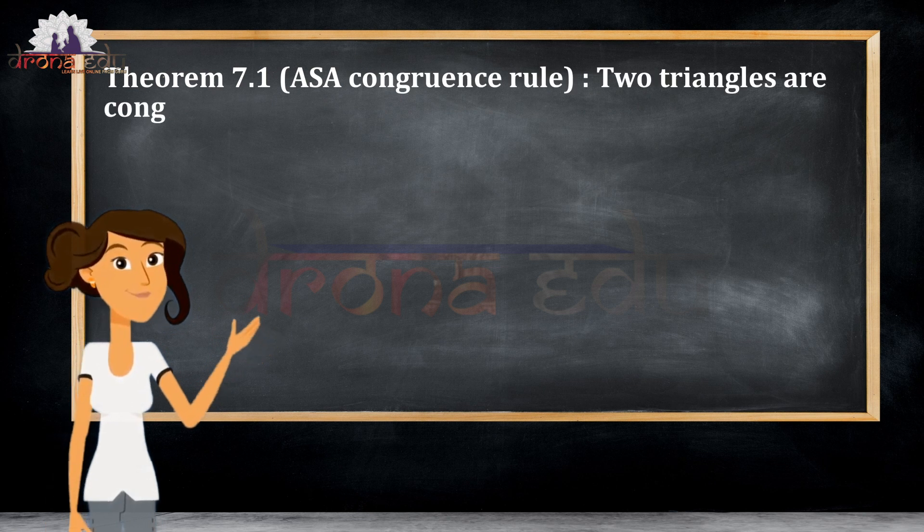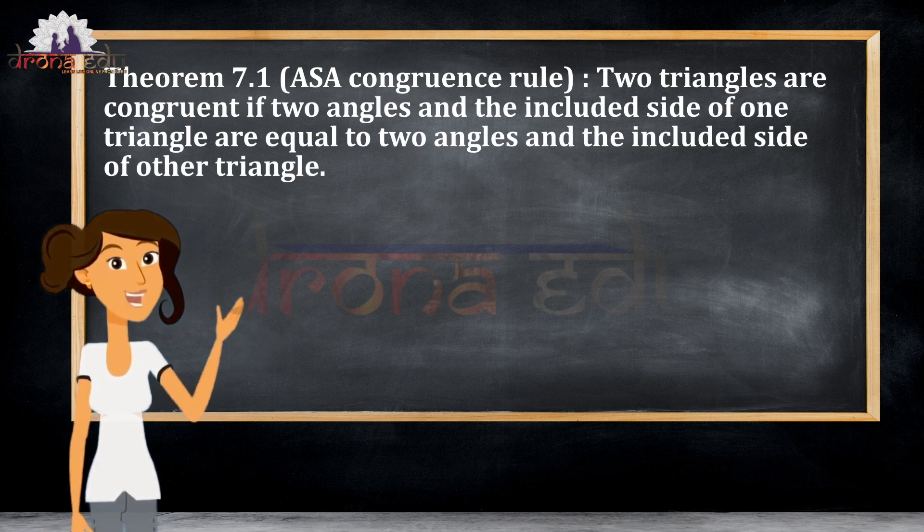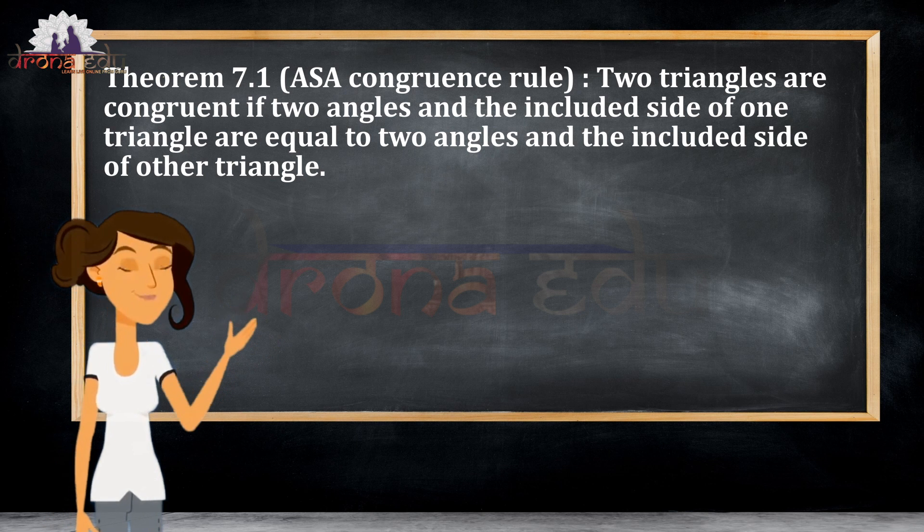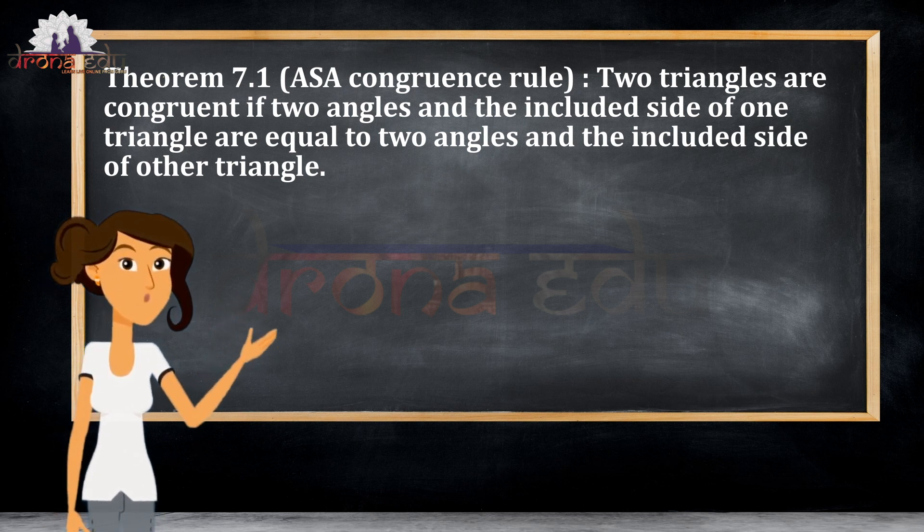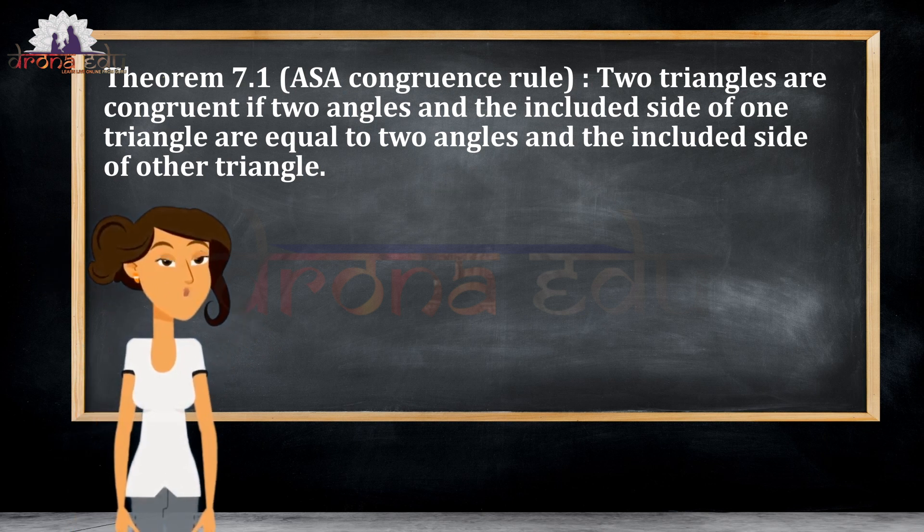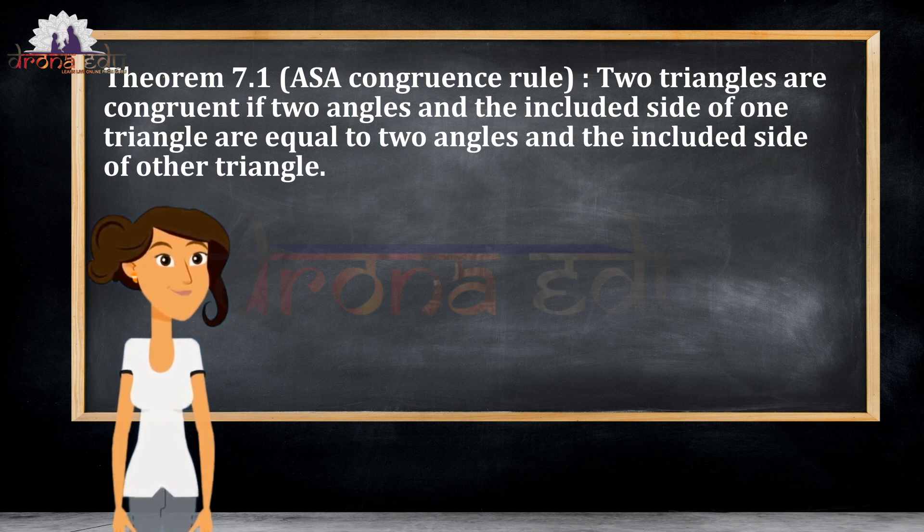With this, we have Theorem 7.1, which is the ASA congruence rule. It states that two triangles are congruent if two angles and the included side of one triangle are equal to two angles and the included side of the other triangle.